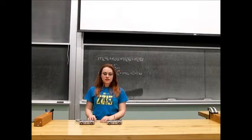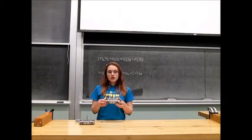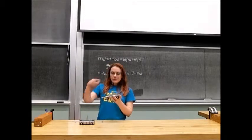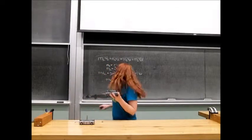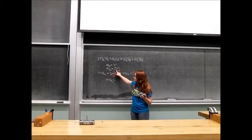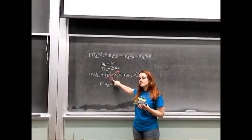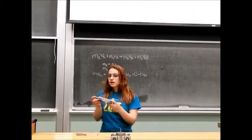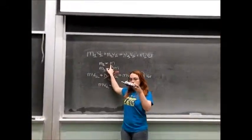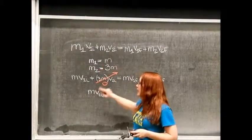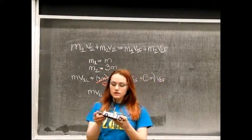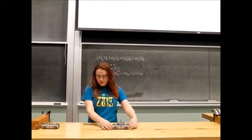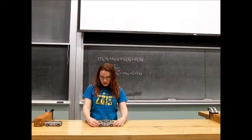For our next elastic collision, we are now going to set our carts to unequal masses. We'll have one cart that has three M — that will be our second cart — and we are going to start our second cart initially at rest. Our first cart we are going to set to just M, which is the mass of the cart, and we are going to give that cart some velocity and then set it off to see what happens after the collision.